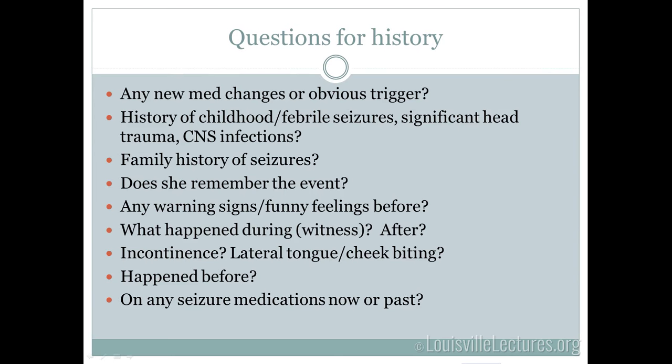Does she have risk factors for seizures? This includes childhood febrile seizures, significant head trauma like depressed skull fractures or intracranial hemorrhages. Concussions don't increase long-term risk for epilepsy, but you can have seizures acutely. Is there any history of CNS infections like meningitis? Is there a family history of seizures? What does she remember about the event — did she lose consciousness? Did she get any funny feelings or warning signs right before? And if there's a witness, they can be very helpful.